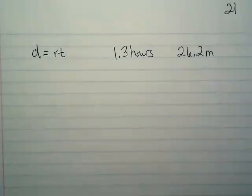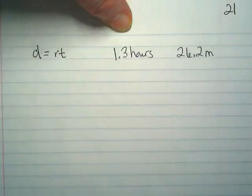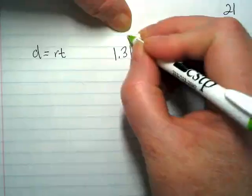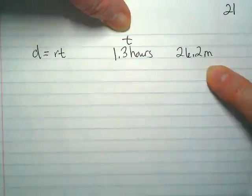Let's look at this formula we have. Which two pieces of the formula do we have? What's the 1.3 hours? Time. That's the T. What's the 26.2 miles?